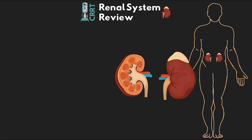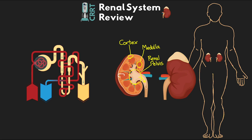We can divide the kidney up into three layers. We have the cortex, which is the outer layer. Next we have the medulla, which is the inner open section. And then finally we have the renal pelvis, where urine is collected and sent to the urethra.